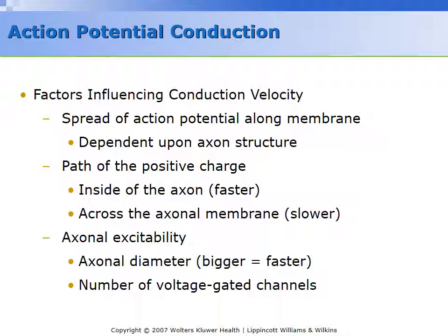The further the current goes down an axon, the more directed it is — it has less leakage. Therefore the depolarization of the membrane is extended further ahead of the action potential, which results in speeding up of the action potential. So there is a correlation between axon diameter and conduction velocity.